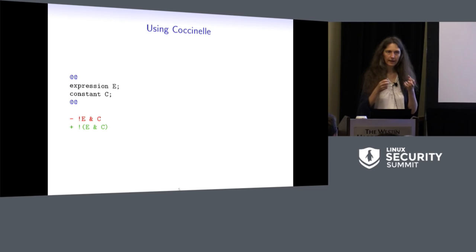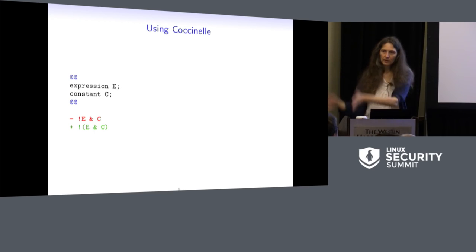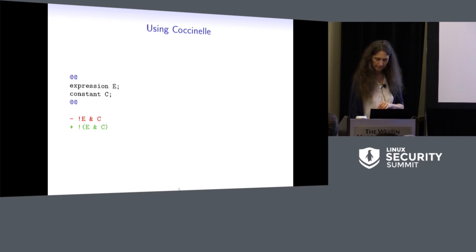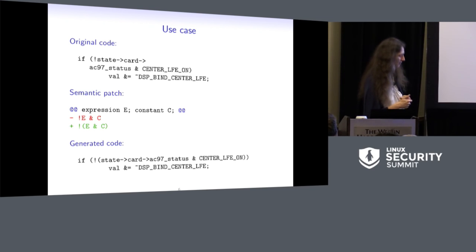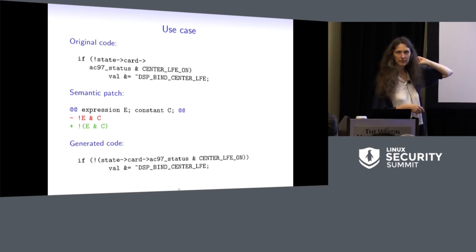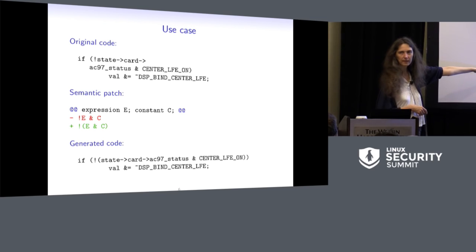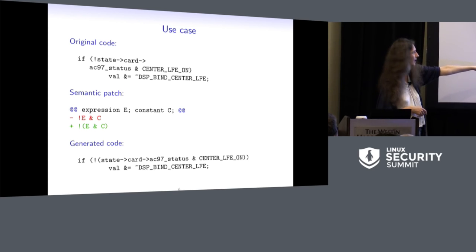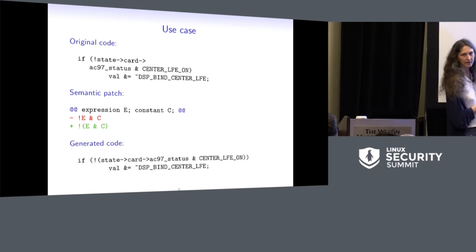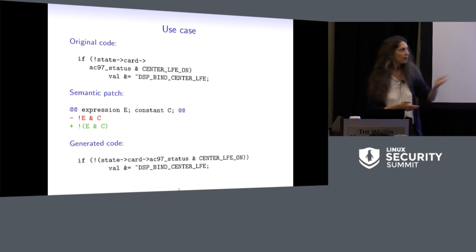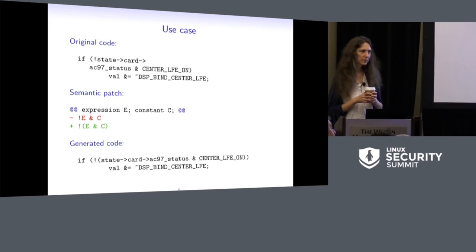By default, Coccinelle doesn't actually change your code. There's an option that will cause it to change your code, but the default is just to generate a patch. You can look through the patch, see if you like it, remove the parts you don't like, and then apply it to your code. Here's an example of a use case — real kernel code with exactly the same spacing and newlines. We find the pattern, run the specification on it, and get the corrected output. You could object that alignment has changed, but Coccinelle has to figure out how to pretty-print it, and that's not really a negative point in this particular example.